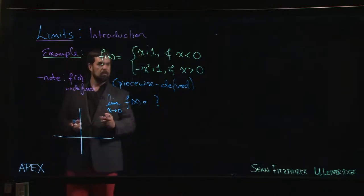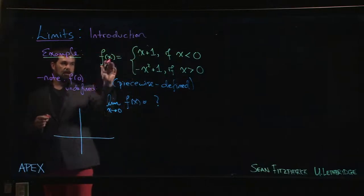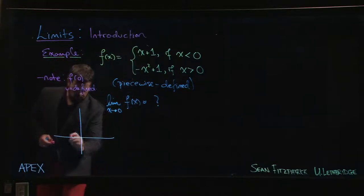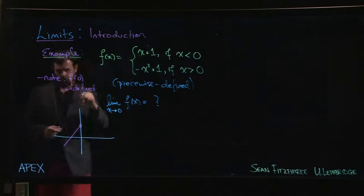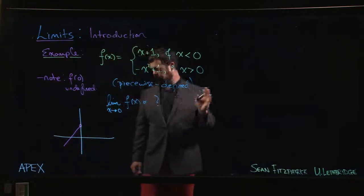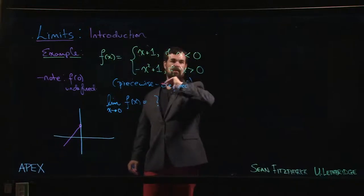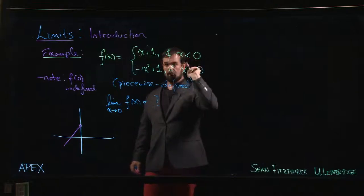If you look at this graphically, well what you're going to find is that for x less than 0 you just have a line, slope 1, intercept 1. You get something like that, with a hollow point at x equals 0 because x is less than 0 here.